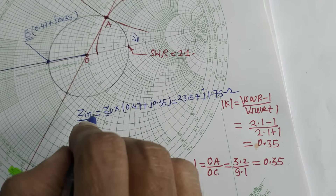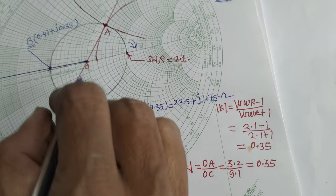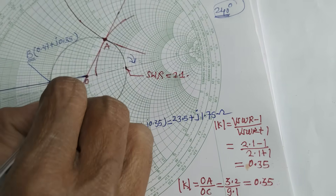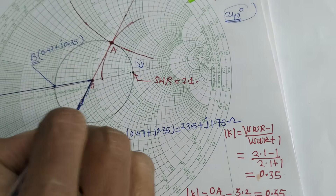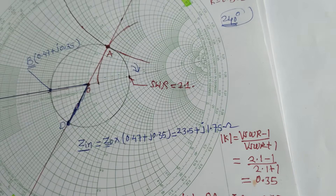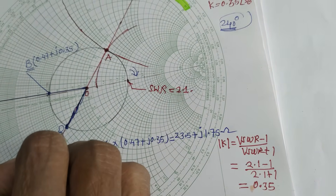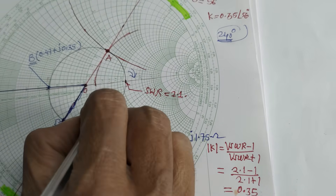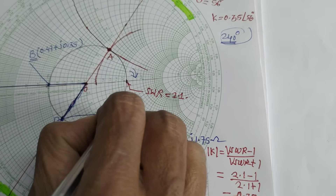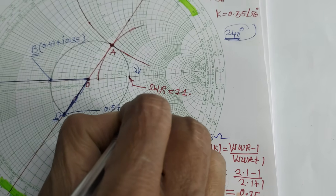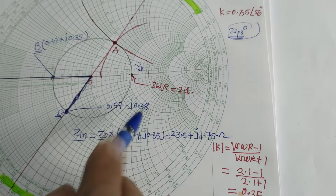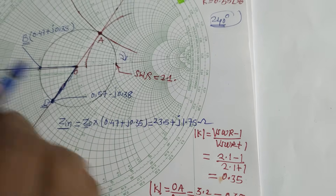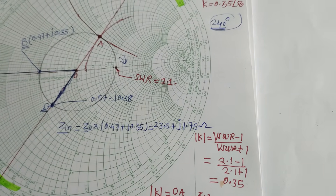For the last part — load admittance — we consider the line opposite to OA on the Smith chart. We mark this point as D and take its readings. Point D reads 0.57 minus j0.38. This gives the value of admittance, specifically the load admittance. We have now calculated the input impedance and the load admittance.